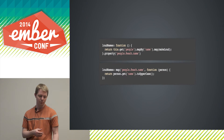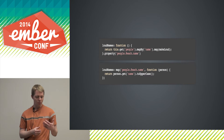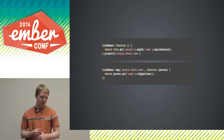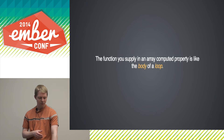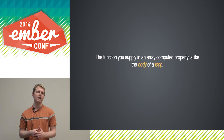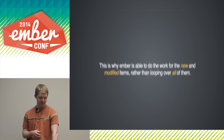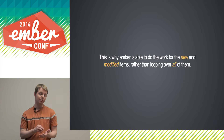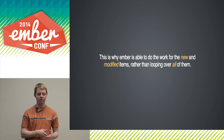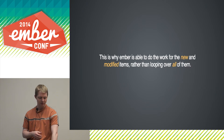Comparing the two bits of code: above you see the old code and below you see the code using ember.computed.map. The difference is like supplying an entire loop versus just supplying the body of a loop. This is why Ember is able to do only partial recomputations — because when we have just the body of a loop, if only a couple of items have changed, we just reapply that body rather than looping over the entire array.